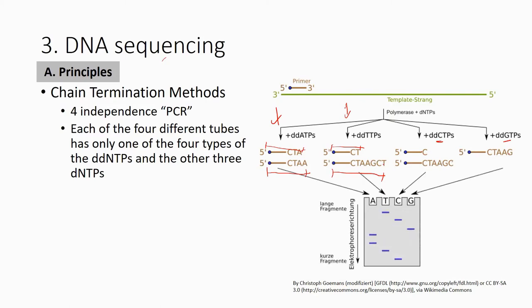After that you put them in a gel. For the first lane you have two fragments, so you should see two bands. The second lane also has two fragments, so two bands. The third one also has two fragments, two bands. The fourth also has two fragments, two bands. The last one has one fragment, so you need one band.